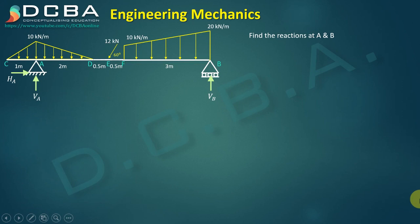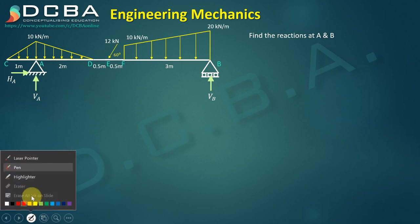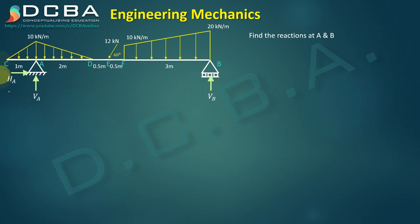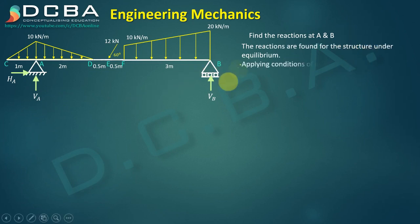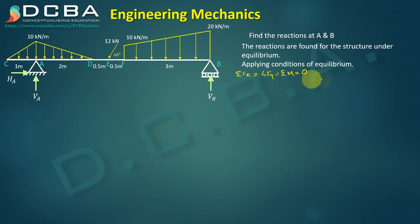Whenever we find the reactions of a particular system, we need to consider that system under equilibrium only. If the system attains equilibrium, we can find the true reactions. We apply three conditions of equilibrium: ΣFx = 0, ΣFy = 0, and ΣM = 0 to get the reactions VA, HA, and VB.